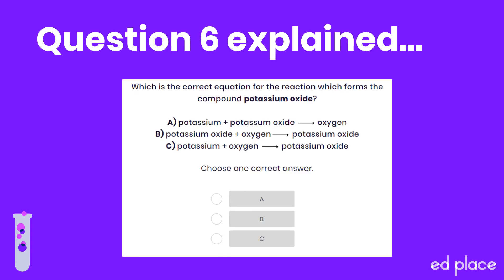In question six, the reactants are potassium and oxygen. It's not until after they've reacted that oxygen can become an oxide. The reactant must be on the left of the arrow, as the product is on the right, making our answer C — potassium oxide.